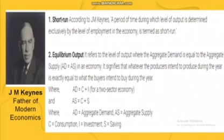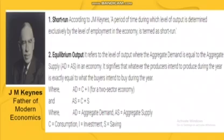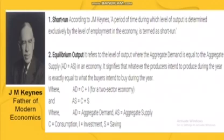For example, if the level of employment increases in the economy, then the level of output will simultaneously increase in the economy. Now we will talk about equilibrium output. Equilibrium output means that as much as we plan to purchase, the producer will also plan to sell.